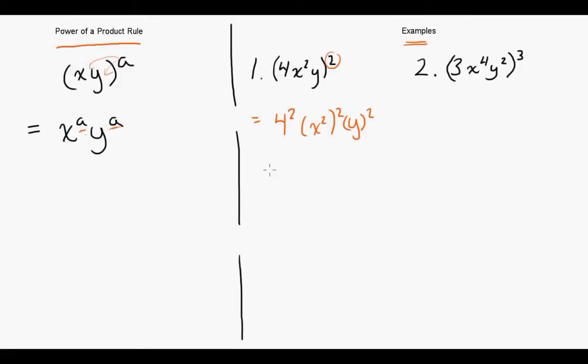4 squared is equal to 16. x squared squared - if you remember the product rule for exponents, we're just going to take those two exponents and multiply them together, and then y is just going to be squared because there's a 1 there, 1 times 2 is just 2.